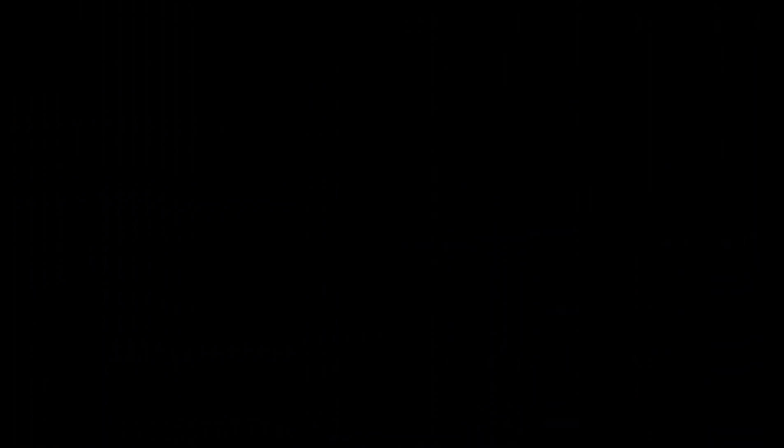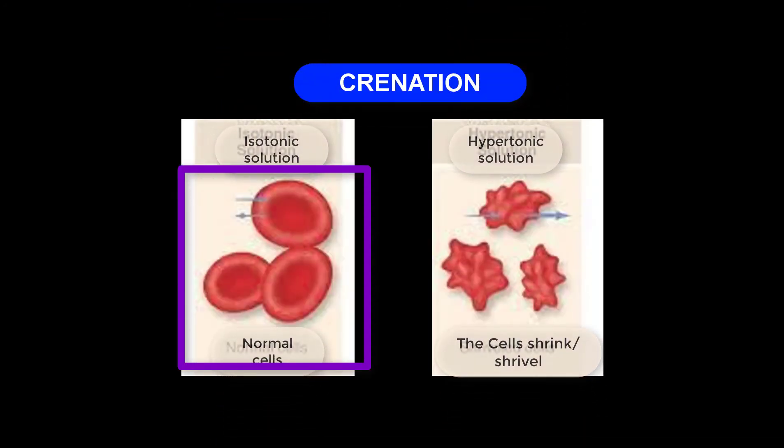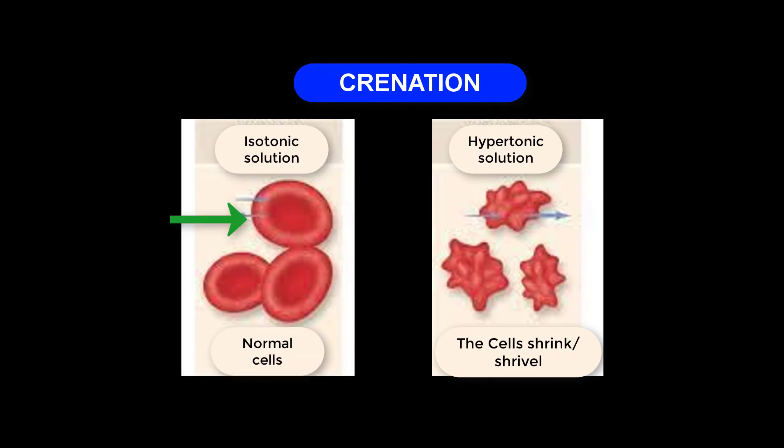When that happens, the cell may end up dying because even the pores found on the membrane may be blocked. I want us to look at this diagrammatic illustration to understand how the process of cremation takes place. Naturally, this is how the red blood cells will look like — that biconcave shape I mentioned earlier. The second diagram shows how the red blood cells look when placed in a hypertonic solution.